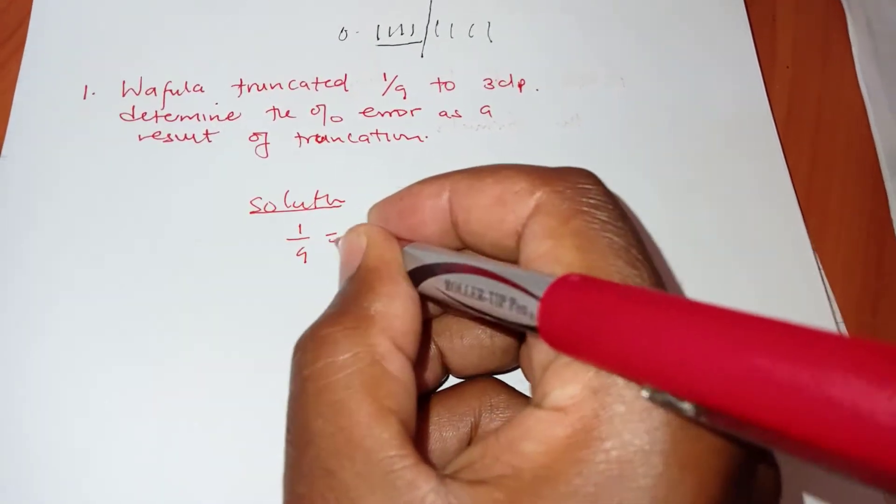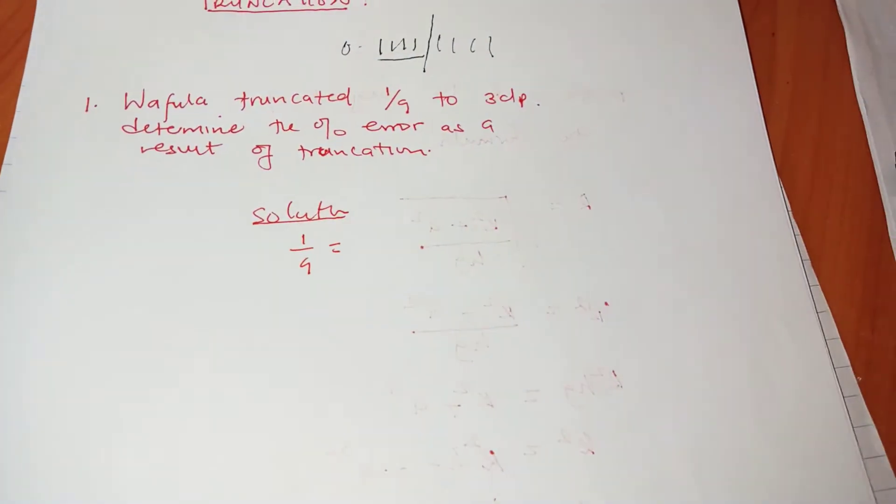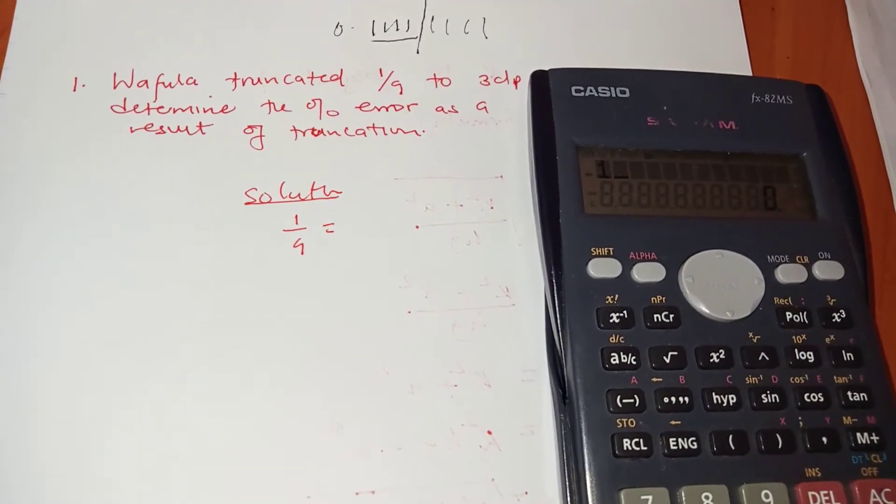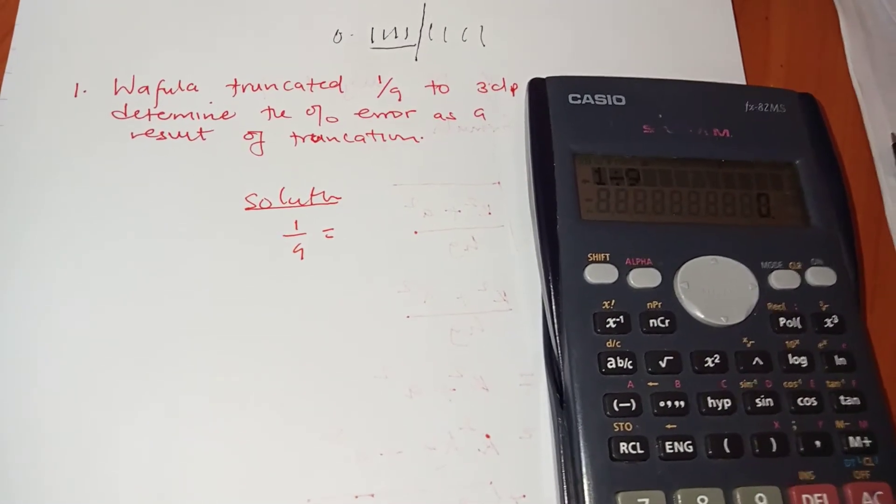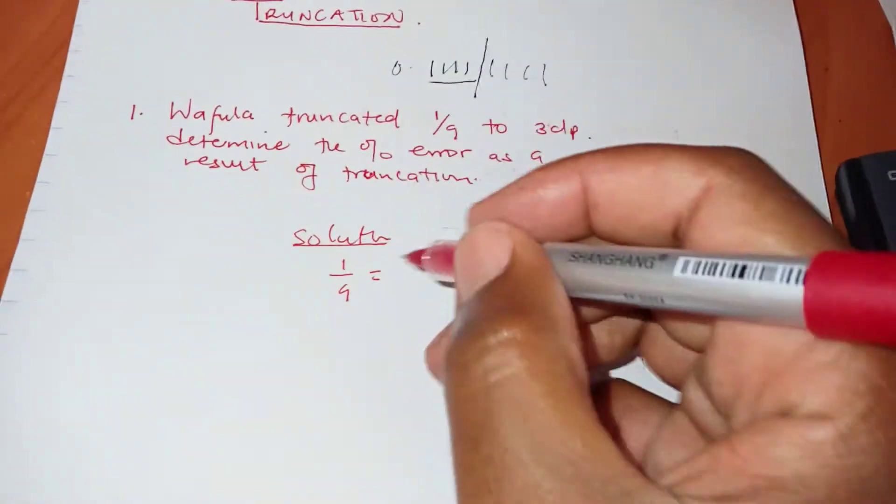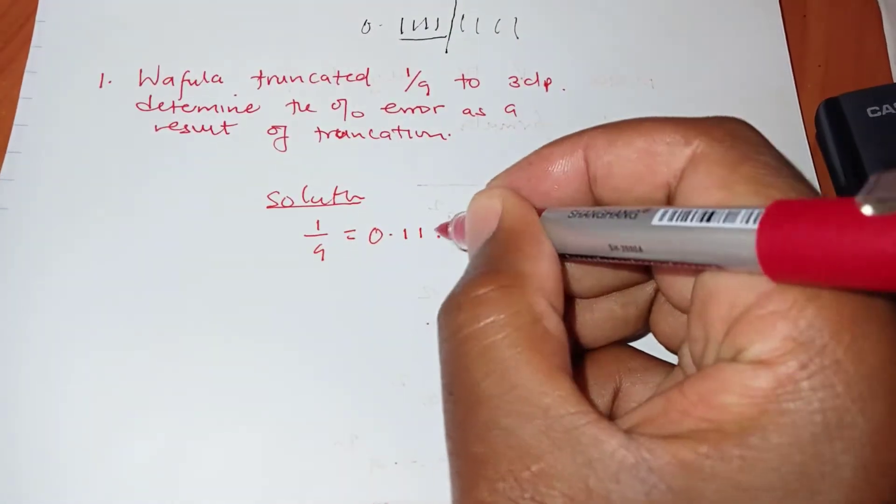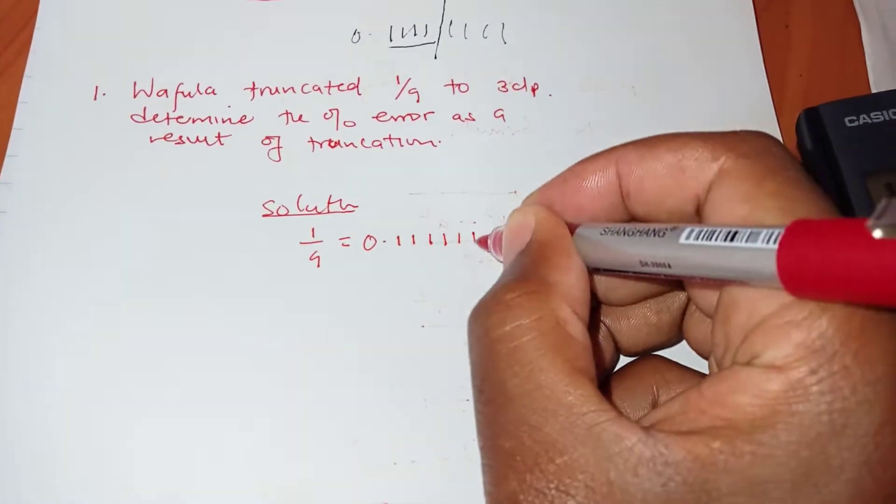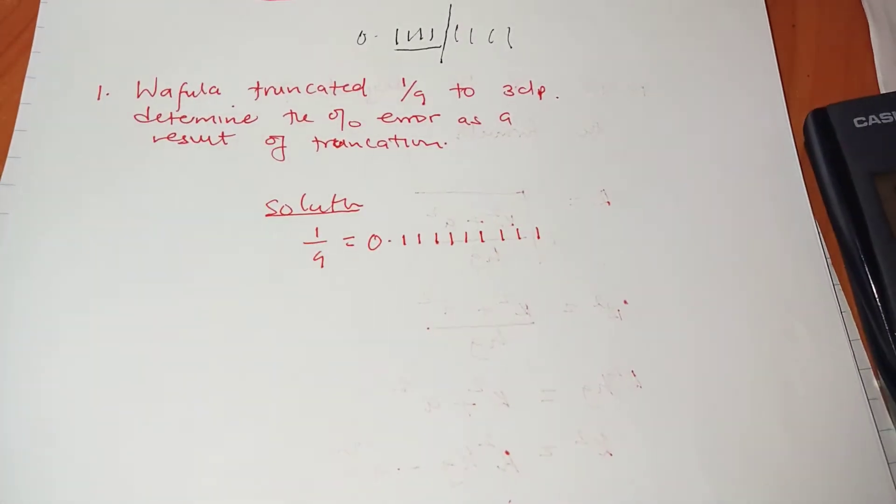So 1 over 9 in decimal form is 0.111. We can confirm from our calculator here. It's 0.11111111111111111. I think we have how many ones?